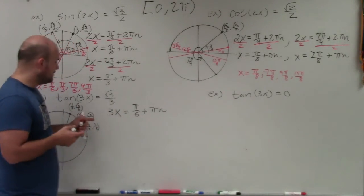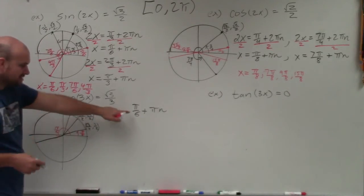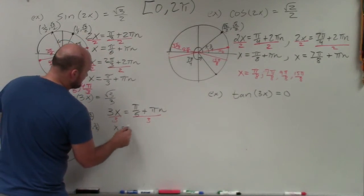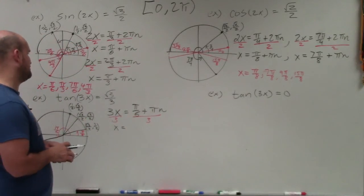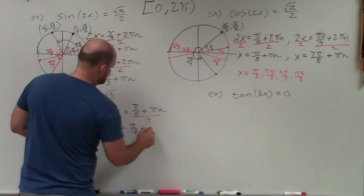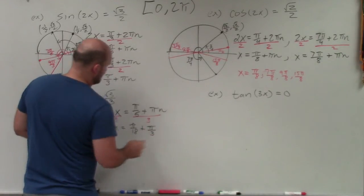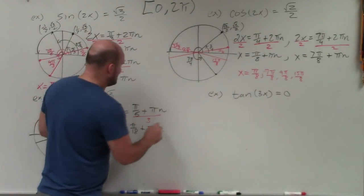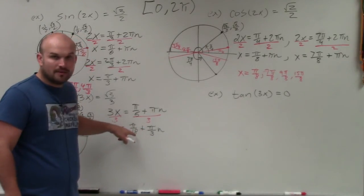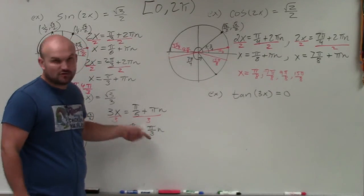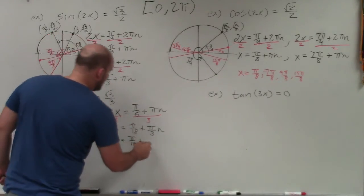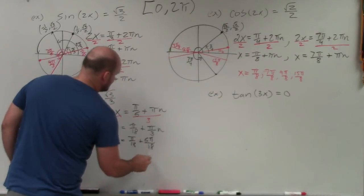That represents all the solutions. Now we solve for x by dividing by 3. So x = (π/6)/3 + (π/3)n = π/18 + π/3 · n. The best thing to do is rewrite π/3 with denominator 18: multiply top and bottom by 6 to get 6π/18. So x = π/18 + 6π/18 · n.